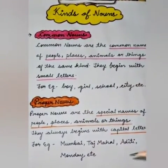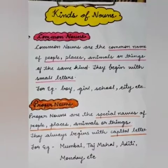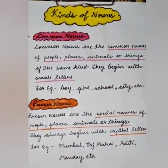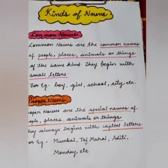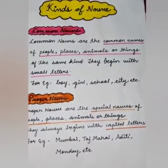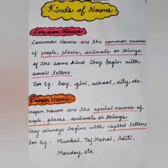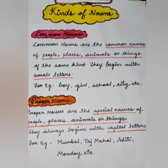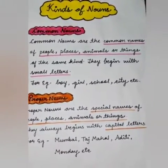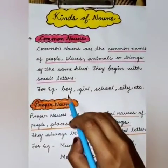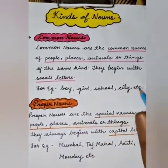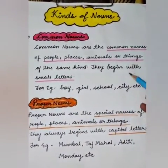Common nouns are the common names given to a person, place, animal or thing — basically a name we generally use for a person, place, animal or thing. For example, we have boy, girl, school, city. They all come under common nouns.